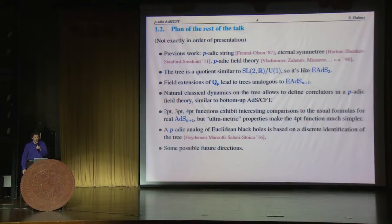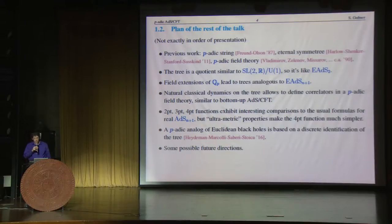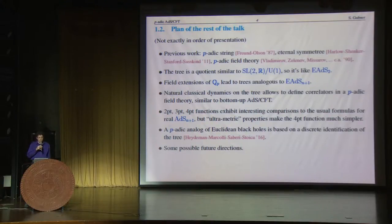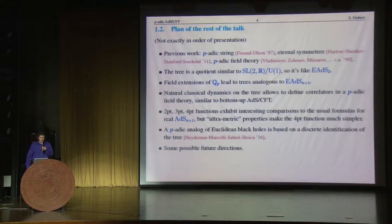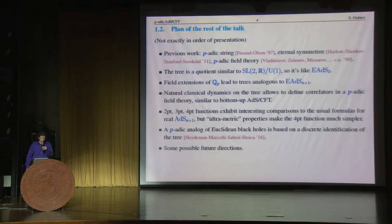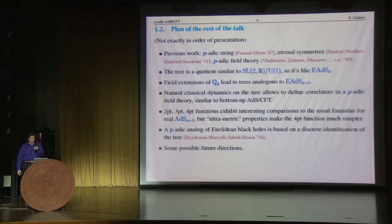The rest of my talk is going to be organized as follows. I will describe some previous work, including the p-adic string, eternal symmetry, and p-adic field theory. I will tell you another wonderful fact about this tree which makes it really seem like AdS — the tree is, in fact, a quotient of p-adic relatives of SL(2,R) and its maximal compact subgroup. I will tell you about field extensions of the p-adics that lead to trees analogous to Euclidean AdS n+1 for any n, and then about a natural classical dynamics on the tree that allows you to define correlators in a p-adic field theory. It is very similar to the story of bottom-up AdS-CFT.